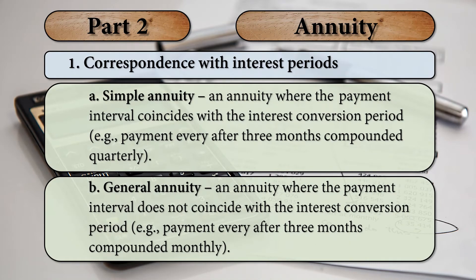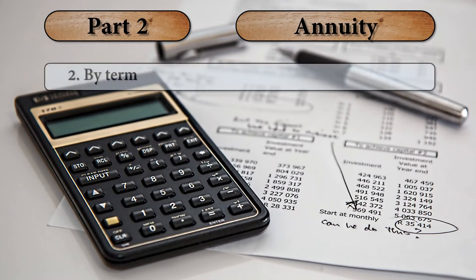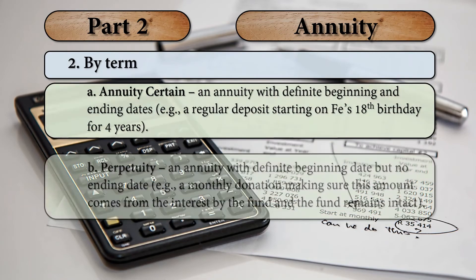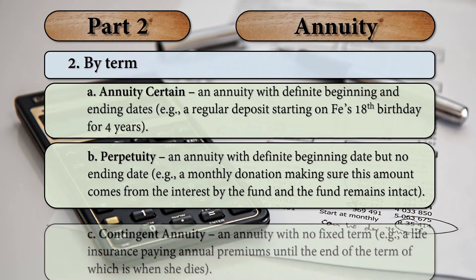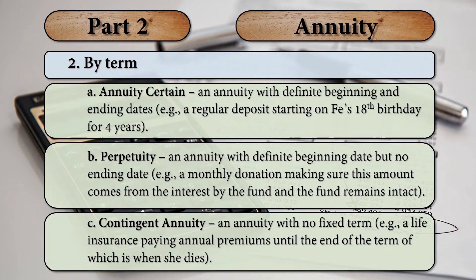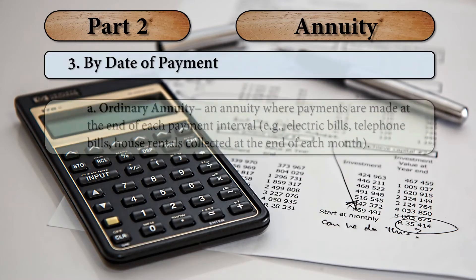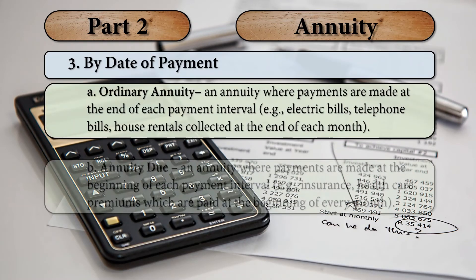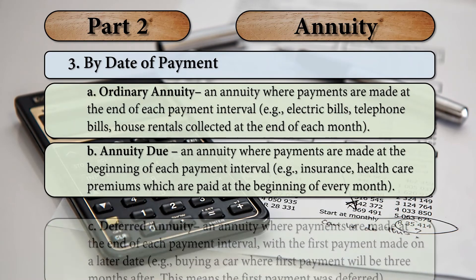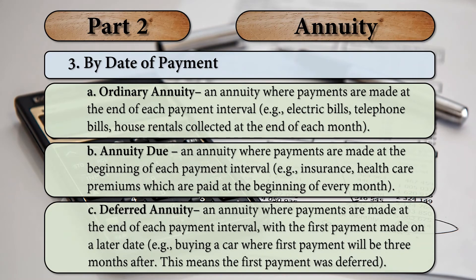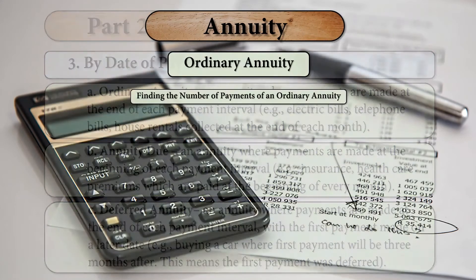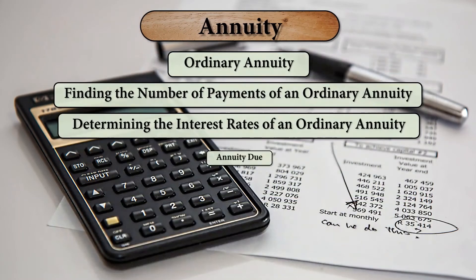These are already discussed during our synchronous class. Under the second classification, by term, there are three types: annuity certain, perpetuity, and contingent annuity. Under the third one, by date of payment: the ordinary annuity, annuity due, and the deferred annuity.